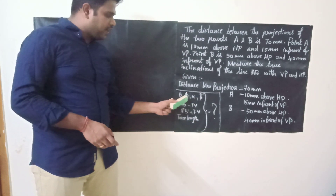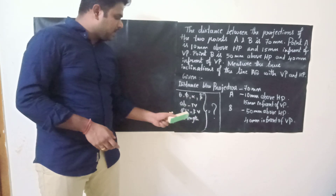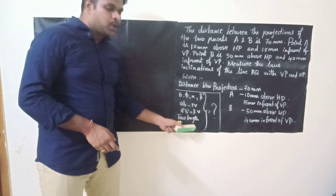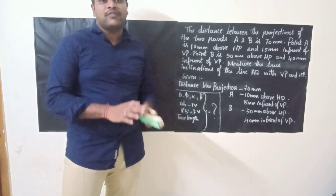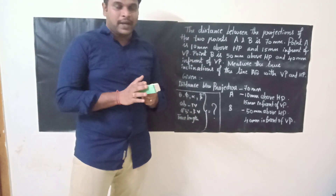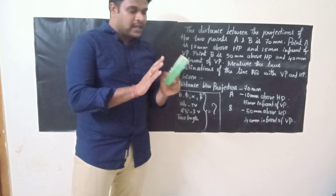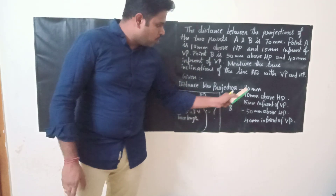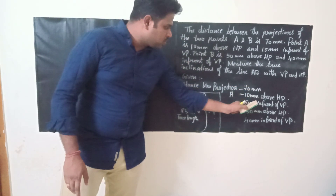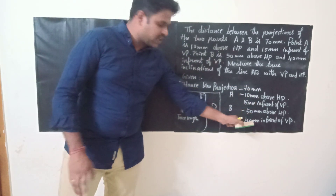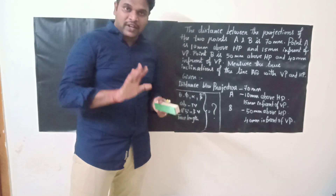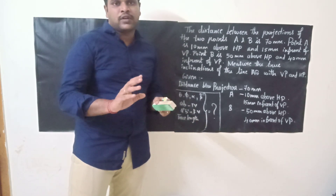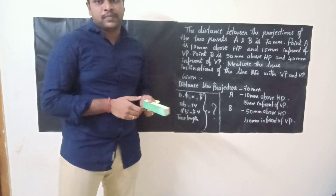We need to determine all of these: theta, phi, alpha, beta, front view, top view, true length, etc. We are going to check whether we are having 5 data — 1, 2, 3, 4, 5. If we have 5 data it is sufficient enough for us to solve the problem.